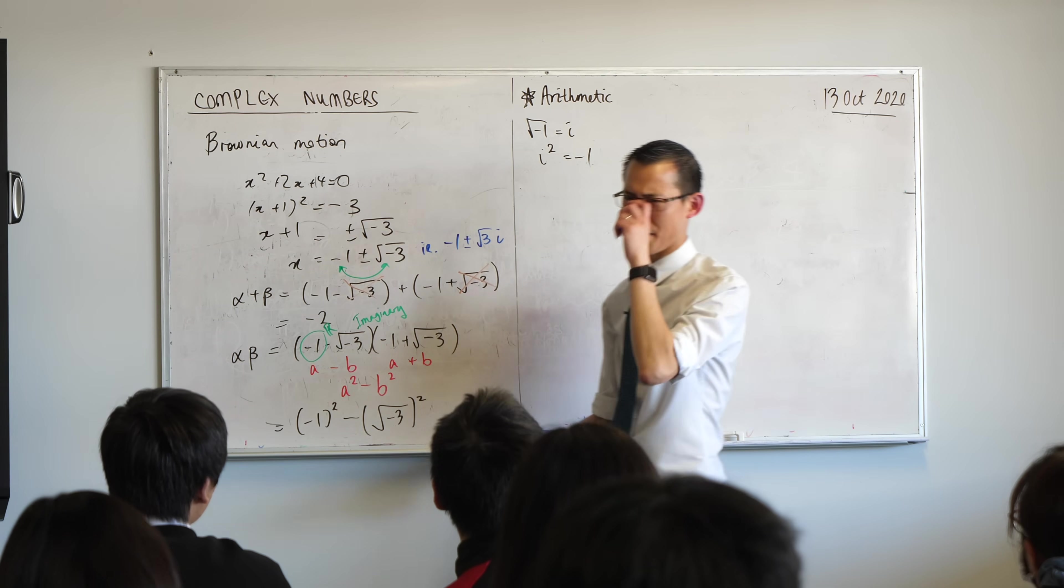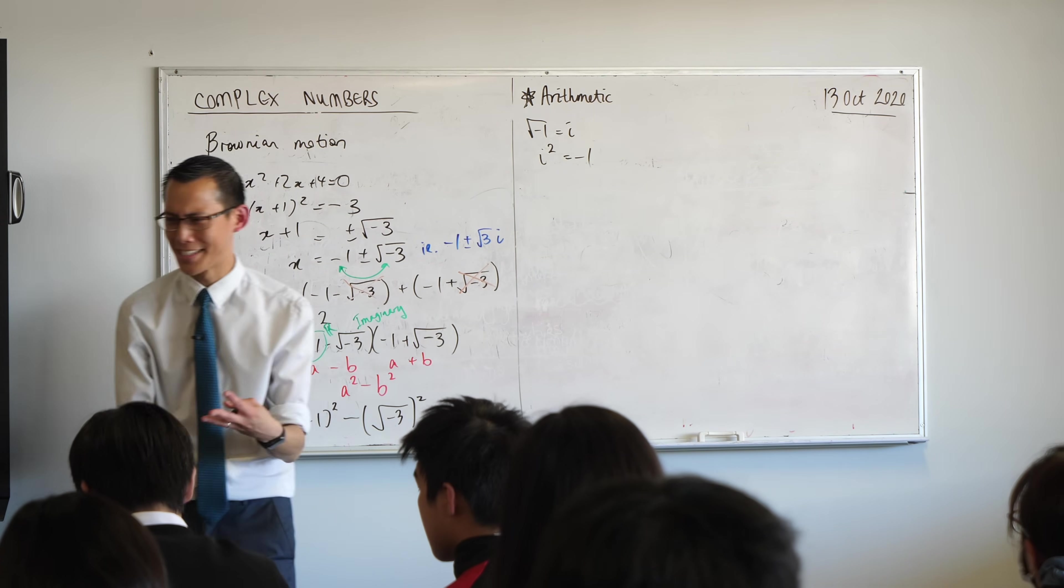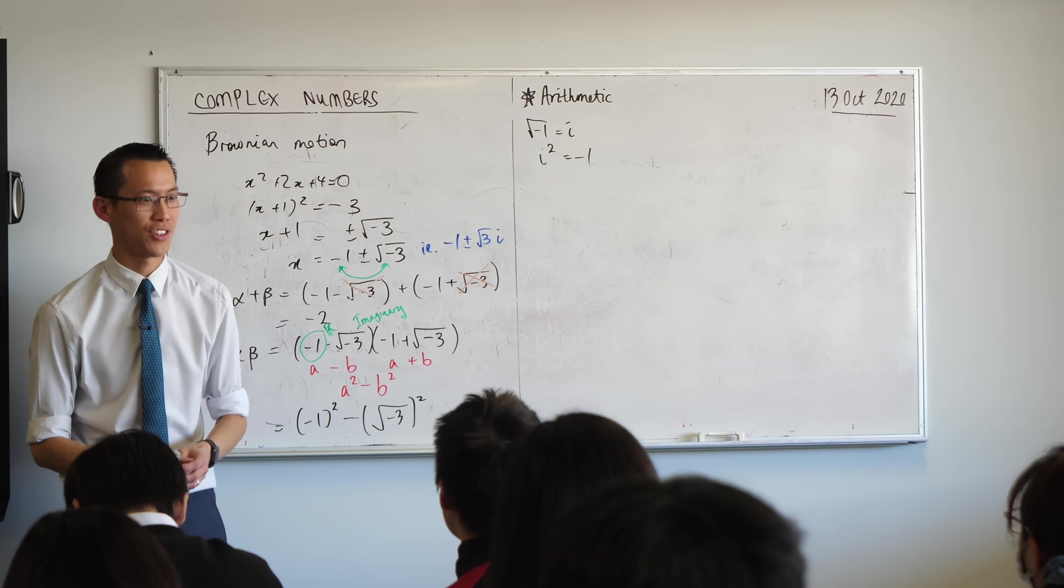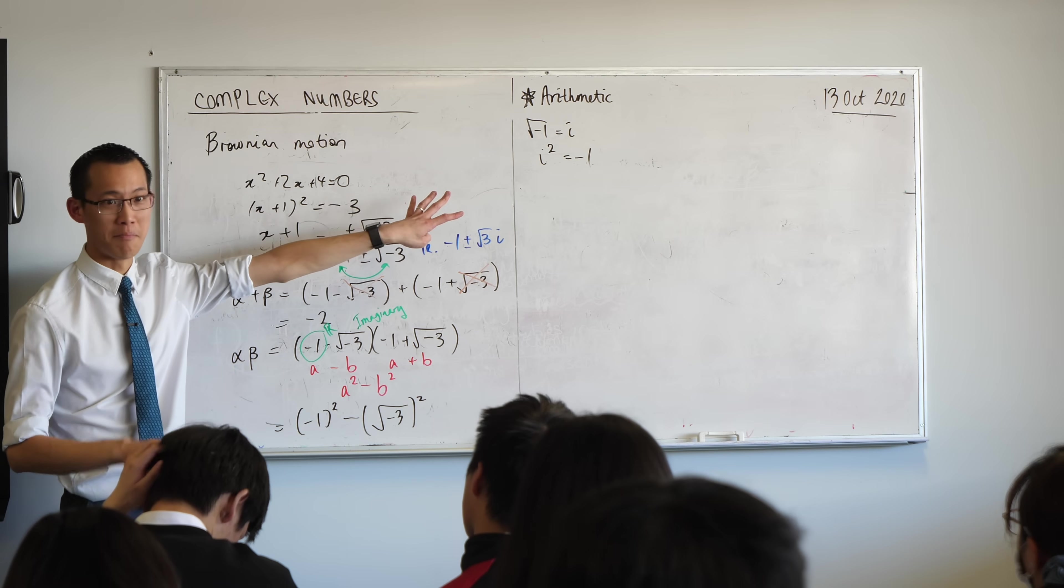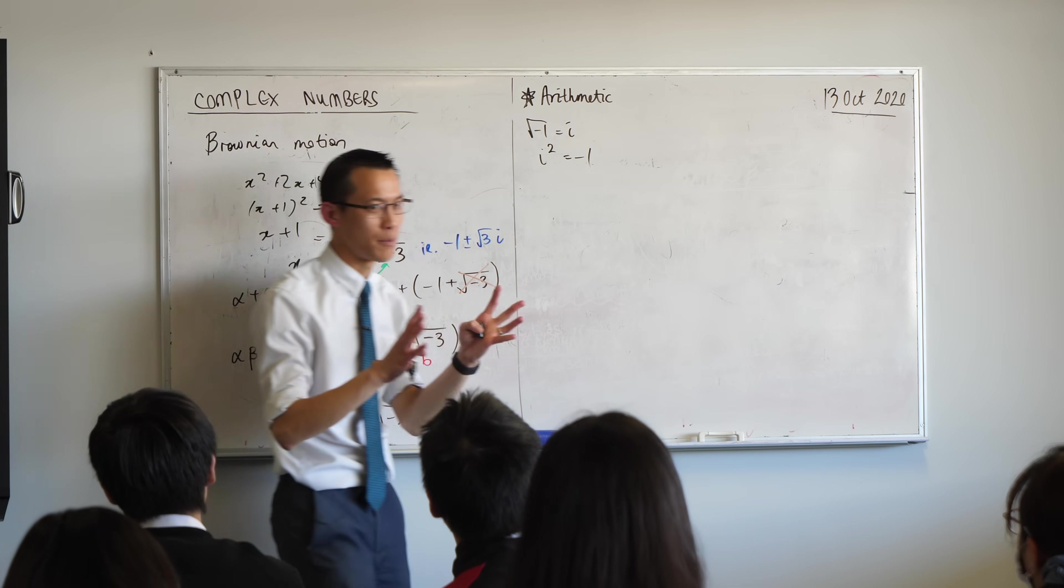So in the past, we would have said there's no number that you can square to get a negative number, but that's because we didn't have the complete picture yet. We do now. More than you even realize. This is the complete picture.